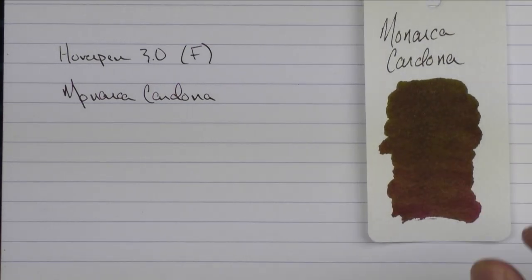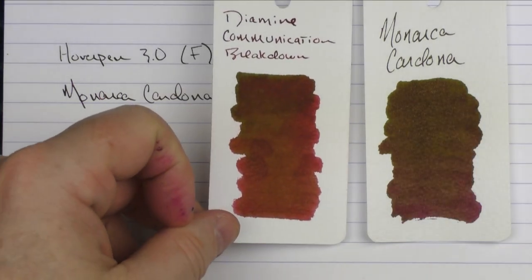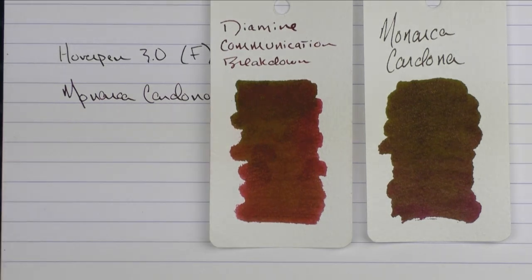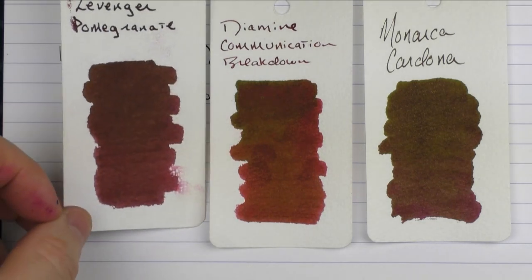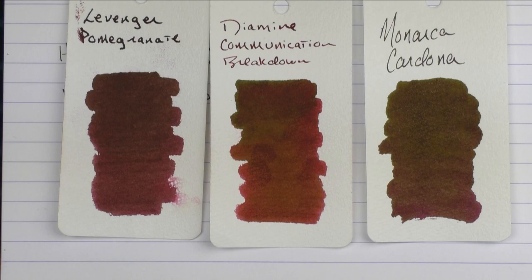This is what the ink looks like. Monarcha is a company based out of Mexico, and they've started to introduce a number of really cool inks that I'll be sharing here soon. It's a nice red with kind of some goldish sheen to it. This is what it looks like in regard to Diamine Communication breakdown. And then here it is with Levenger Pomegranate.